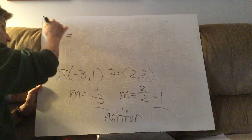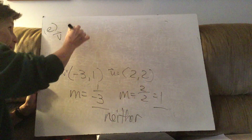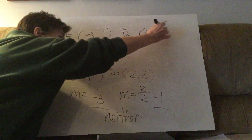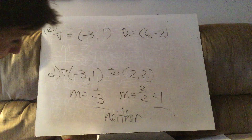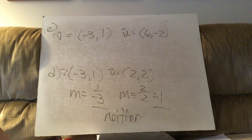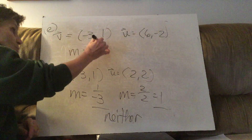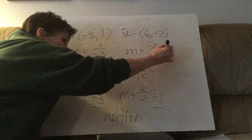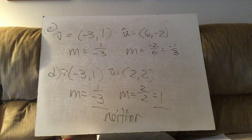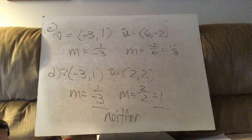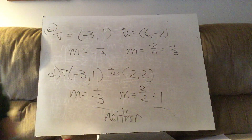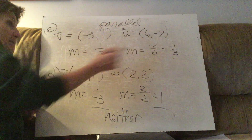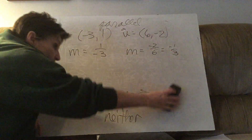Problem E: vectors (-3,1) and (6,-2). Slope here is 1 over negative 3. Slope of the second: y over x, reduced is negative 1 over 3. Remember, in a fraction the negative can go on top or bottom — these are exactly the same number. Since they have the same slope, these two vectors are parallel.